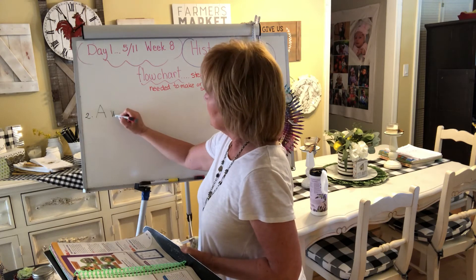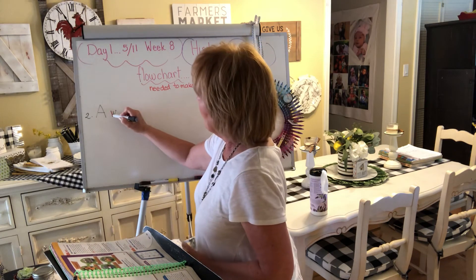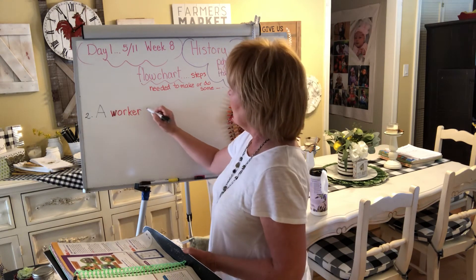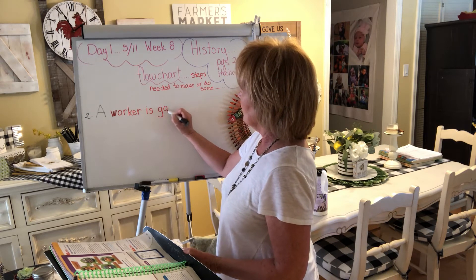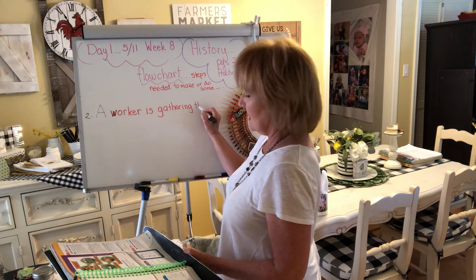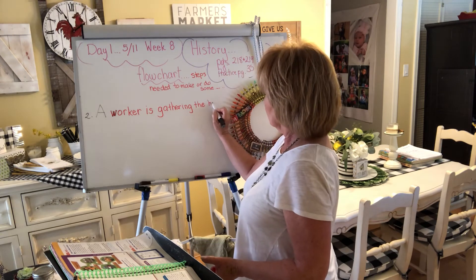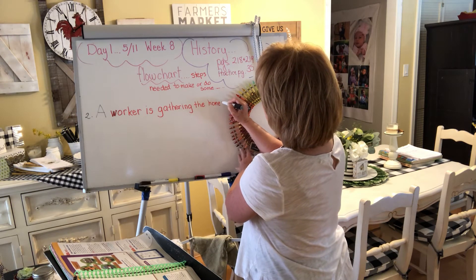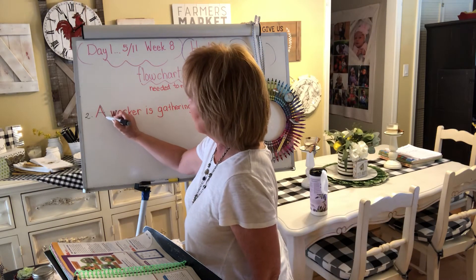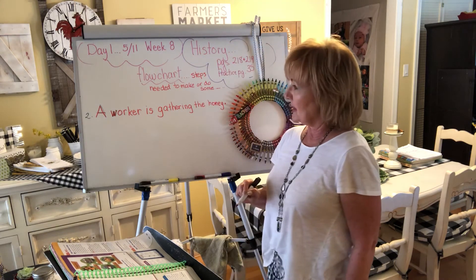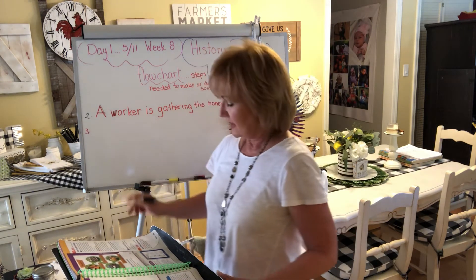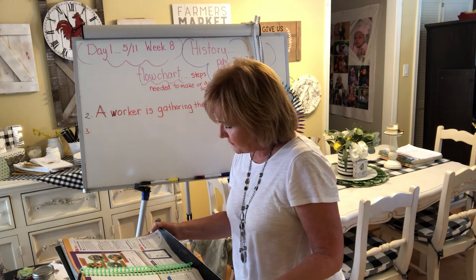So let's write: 'A worker is gathering the honey.' You can color these pictures if you'd like. 'A worker is gathering the honey.' That is a sentence, so it starts with a capital and ends with a period. You can see how they're dressed so that they don't get stung.